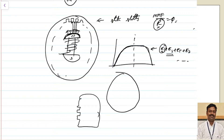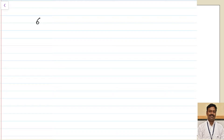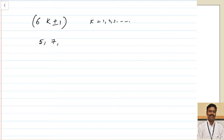The third harmonic component will be suppressed due to our connection diagram — as we have seen during slot harmonics also — because if you are connecting your winding in star or delta connection, that will suppress your third harmonic component in the line, so we are not worried about that. Our major concern is about the fifth harmonic, seventh harmonic, and these components. The harmonics that are produced can be written in the form of 6k ± 1, where k is an integer (1, 2, 3, …). Substituting k = 1 gives 5 and 7; substituting k = 2 gives 11 and 13, and so on.